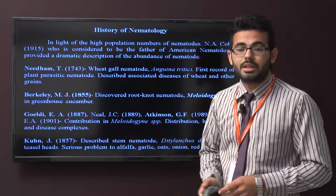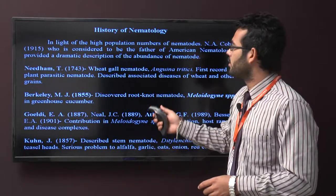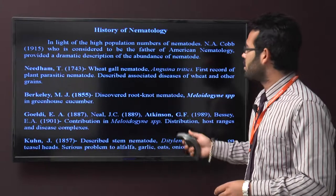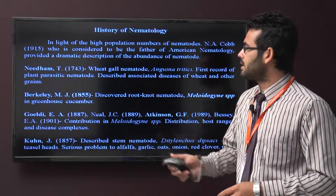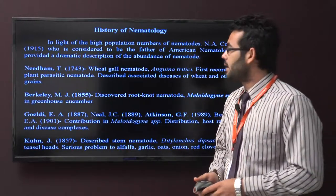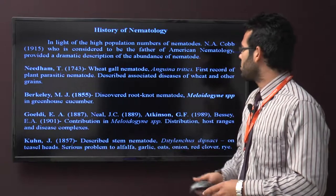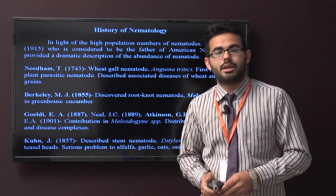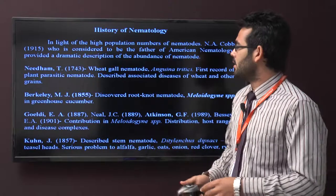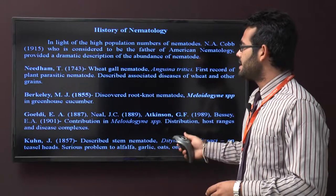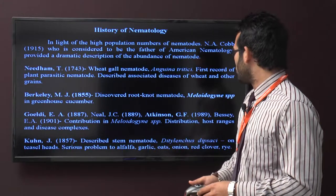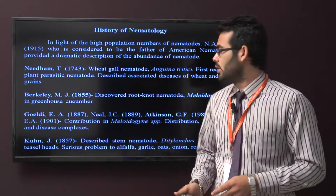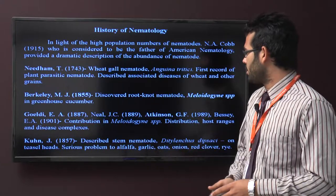The next scientist is Needham, who found the wheat gall nematode, Anguina tritici, the first recorded plant parasitic nematode. Next is Berkeley M.J., who discovered the root nematodes as Meloidogyne. And then Goldie, Neal, and Atkinson, who discovered the Meloidogyne species on host ranges and the disease complex. And Coon, who described the stem nematode.